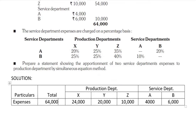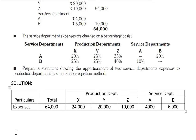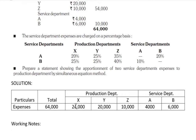Now let's see how we make the equations, starting with the working notes. Service department A has expenses of 4,000 rupees, which is to be distributed — including 20% to service department B, which is 10% received back from B. Let's make the first equation.